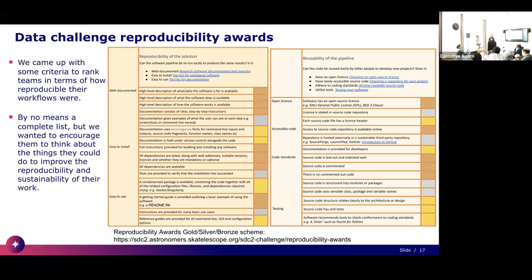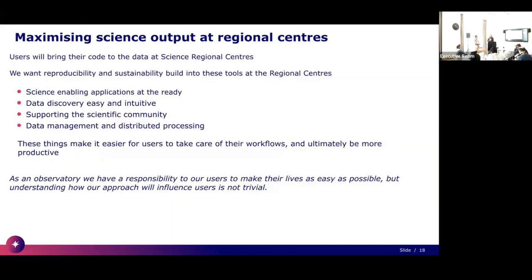We came up with a bronze/silver/gold scheme for reproducibility, developed with help from SSI and Rachel Ainsworth. Some criteria are easy, some take more time. We found this was actually very successful in getting people to think about these things — a lot of teams hadn't needed to worry about code standards, testing, or making their code easy for others to install. Thankfully in recent years this theme has come up more readily, particularly for larger science collaborations.